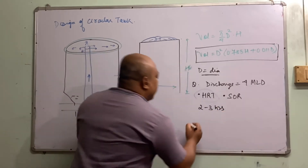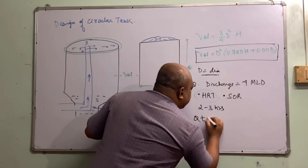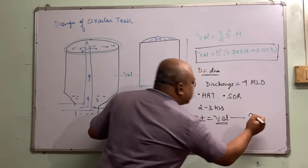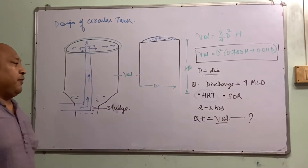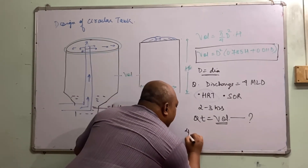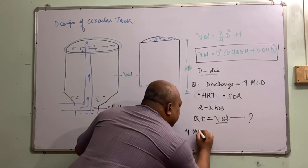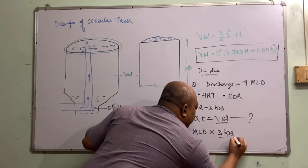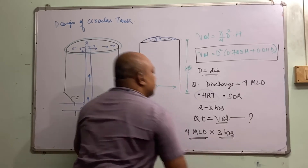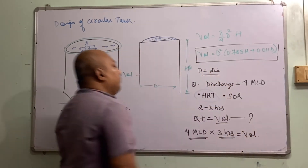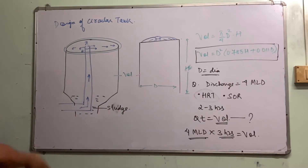So Q × t equals volume, and this volume is what we are going to design. Q is 4 MLD, and we assume t is 3 hours. So whatever volume we get is the design volume.